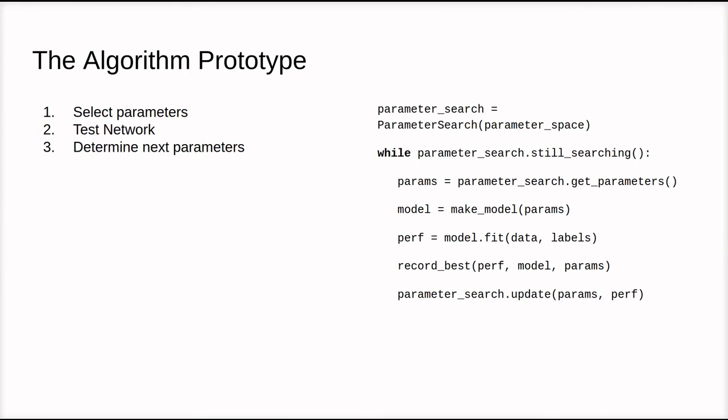And what the algorithms we're going to talk about in this lecture break down into a very simple prototype. First, you select parameters you want to test, you test the network, and by tested I mean instantiate a network using the parameters. So the number of nodes in the hidden layer, and then you train it using the learning rate that you specify and the regularization term. And then you see what the validation performance was at the end, and then you determine what parameters you want to use next.